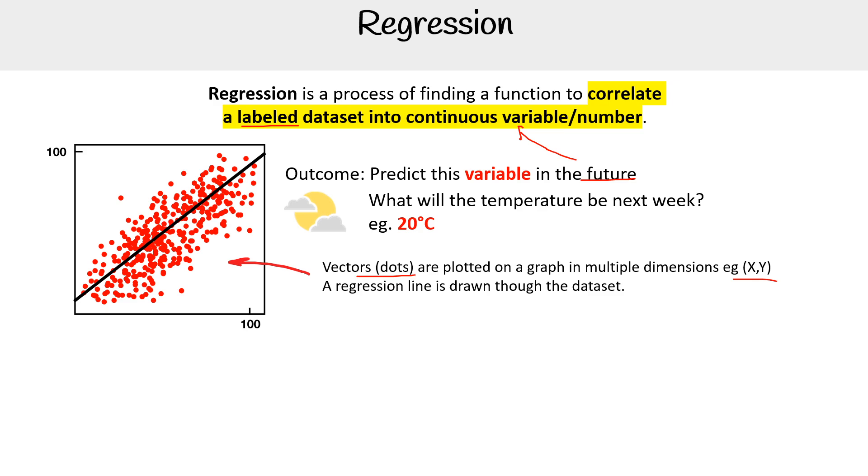Then you have a regression line—the line that's drawn through our dataset. That's going to help us figure out how to predict the value.